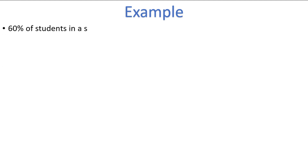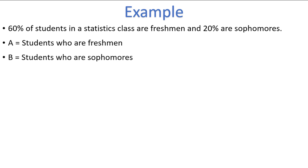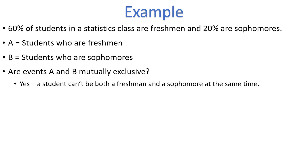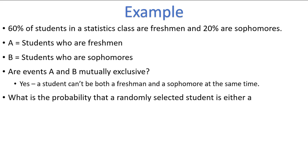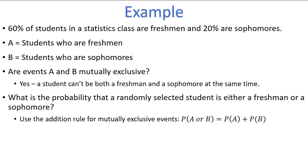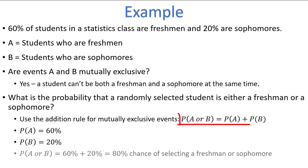Suppose that 60% of students in a statistics class are freshmen and 20% are sophomores. Let A equal students who are freshmen and B equal students who are sophomores. Are events A and B mutually exclusive? The answer is yes — a student can't be both a freshman and a sophomore at the same time, so events A and B are mutually exclusive. What is the probability that a randomly selected student is either a freshman or a sophomore? Since these two events are mutually exclusive, we simply add the two probabilities: 60% plus 20% equals 80%. There is an 80% chance that a randomly selected student will be either a freshman or a sophomore.